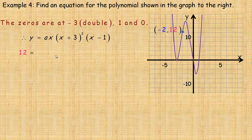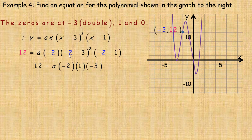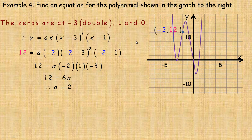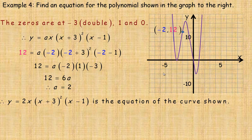We substitute 12 for y and negative 2 for x. Negative 2 plus 3 is 1, and negative 2 minus 1 is negative 3. Multiplying negative 2, 1 squared, and negative 3 together gives 6, so 12 equals 6a. Dividing by 6 gives a equals 2. Substituting 2 in place of a, the specific equation for this graph is y equals 2x times (x plus 3) squared times (x minus 1). It's already in a nice factored form, so we leave it as is.